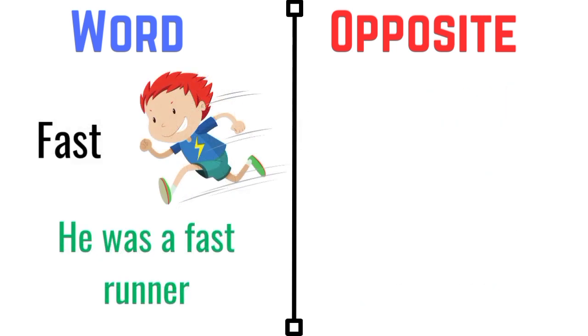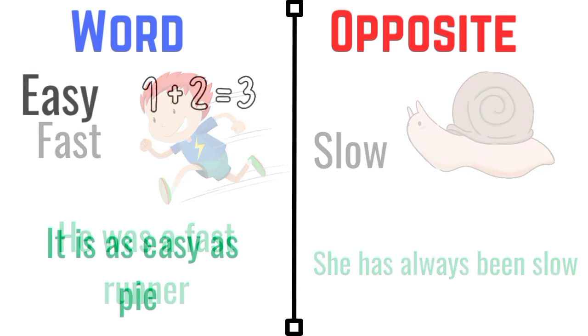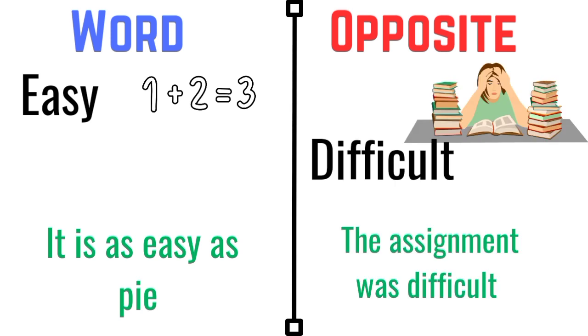Fast. He was a fast runner. The opposite of fast is slow. She has always been slow. Easy. It is as easy as pie. The opposite of easy is difficult. The assignment was difficult.